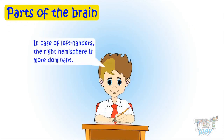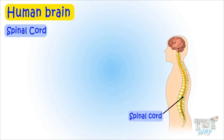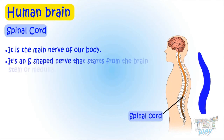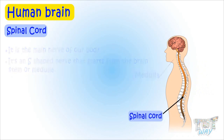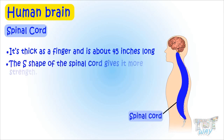Now let's learn about the spinal cord. It is the main nerve of our body — an S-shaped nerve that starts from the brainstem or medulla. It's as thick as a finger and is about 45 inches long. The S-shape of the spinal cord gives it more strength.